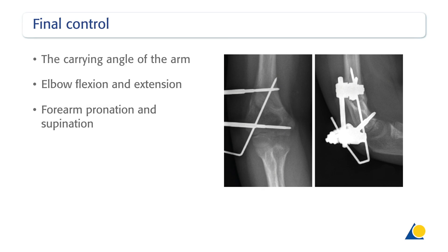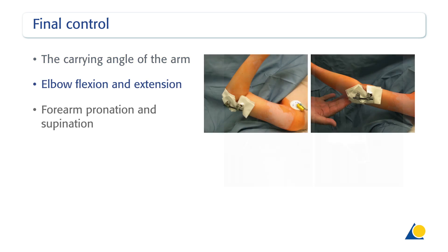Clinically, after definitive fixation, the stability and axial alignment must be checked radiologically. The following parameters must be identical to the contralateral side: the carrying angle of the arm, elbow flexion and extension, and forearm pronation and supination.